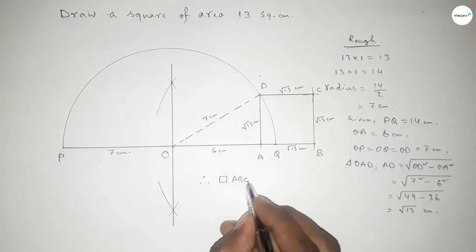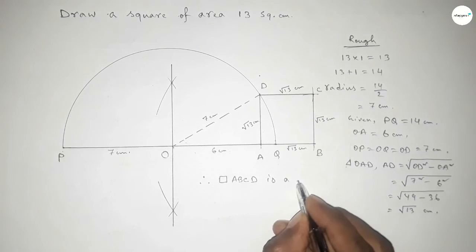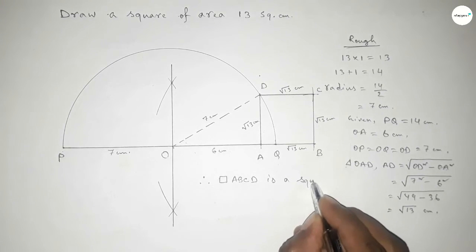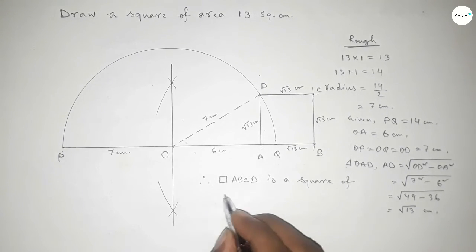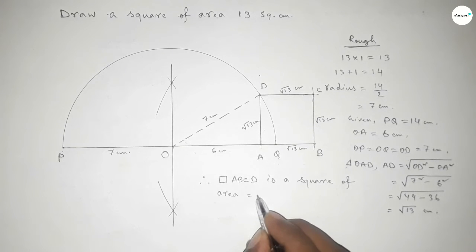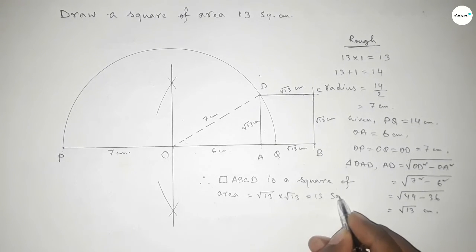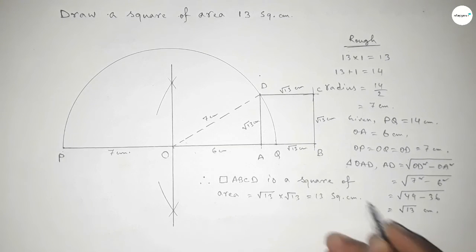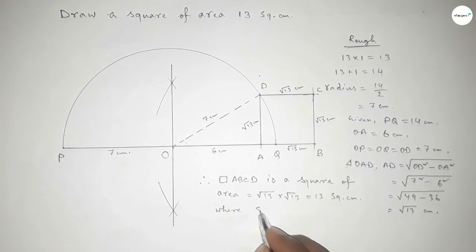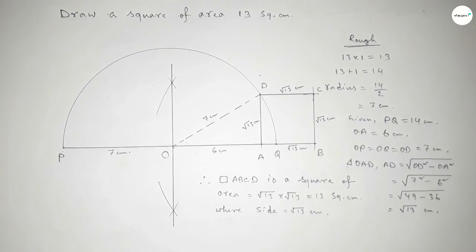Therefore, rectangle ABCD is a square of area = √13 × √13 = 13 square centimeters, where each side equals √13 centimeters. That's all — thanks for watching. If this video is helpful, please share it with your friends.